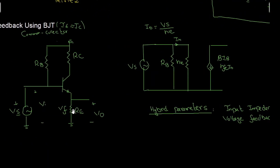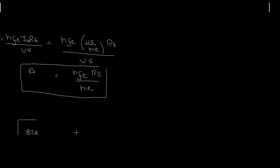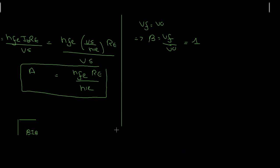When the feedback is connected, the feedback voltage Vf is equal to V0. This means beta, which equals Vf/V0, is equal to 1. So beta = 1. The gain with feedback equals A divided by (1 + beta·A).